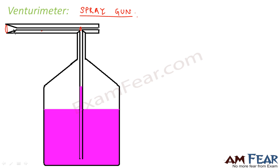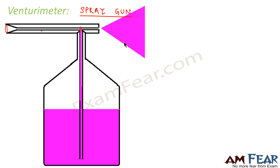The velocity of the air changes depending on the cross-sectional area. Because of the difference in cross-sectional area, there is a difference in pressure. Due to this pressure difference, the level of the liquid in the pipe rises. It draws the liquid from the trough containing the fluid, the liquid moves up, and through the opening it comes out in the form of a spray. Basically, because of the difference in cross-sectional area there is a pressure difference which forces the fluid to flow — the fluid moves up through the pipe and is sprayed out.